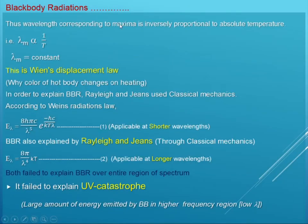The wavelength corresponding to the maxima is inversely proportional to the absolute temperature. Mathematically, we can write lambda_m inversely proportional to temperature, which means lambda_m into T equals constant. This is Wien's Displacement Law.